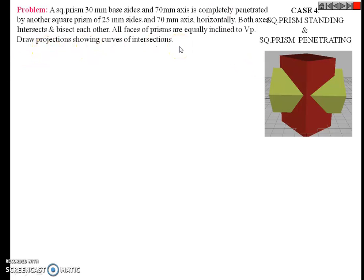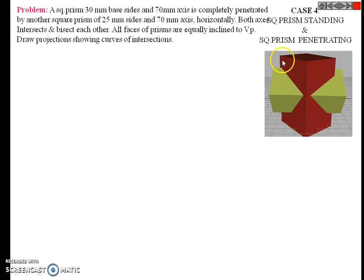Draw the projection showing curves of intersection. This is case number 4: square prism standing with a square prism penetrating. The first solid is the vertical square prism, and the second solid is the horizontal square prism. The vertical square prism has a base side of 30 mm, the horizontal square prism has a base side of 25 mm, and both prisms have a length of 70 mm. The axes of both prisms intersect and bisect each other.